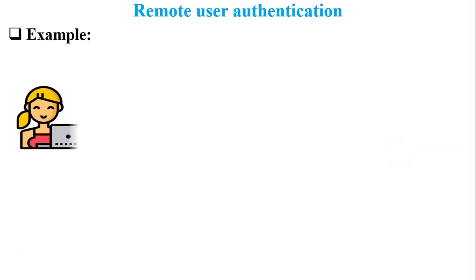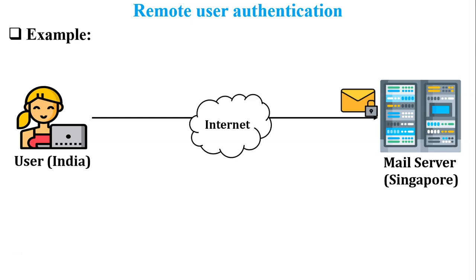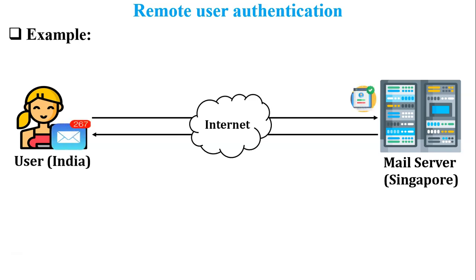For example, there is one user who wants to access her mailbox, but the email server is located in Singapore. The user and the mail server are in different countries, so this user is called a remote user. The user provides login ID and password and sends the request through the internet to the mail server. The mail server checks the ID and password against its database; if both match, the user is authenticated and the mail server provides access to the mailbox. This is remote user authentication — here the internet is a non-secure network.